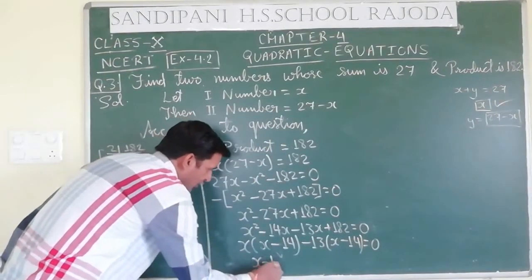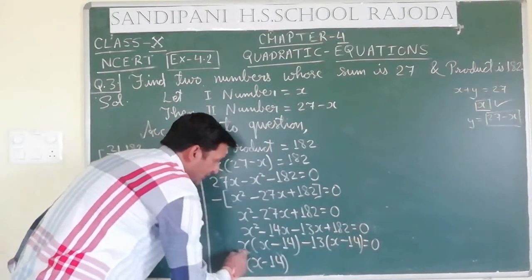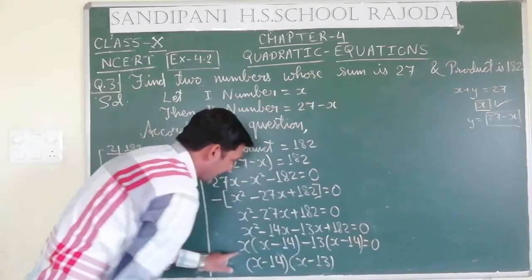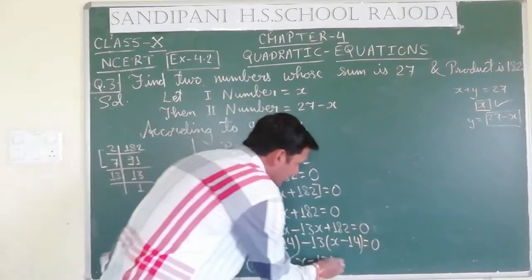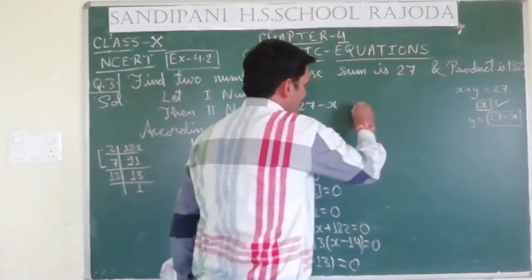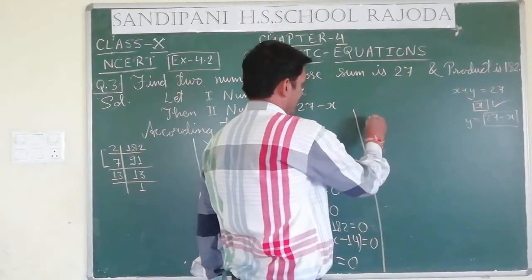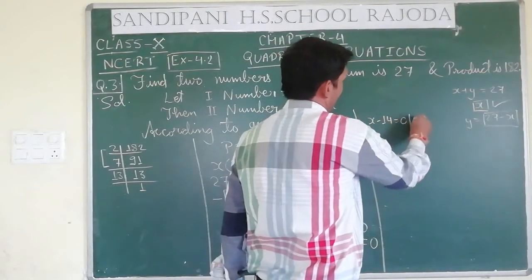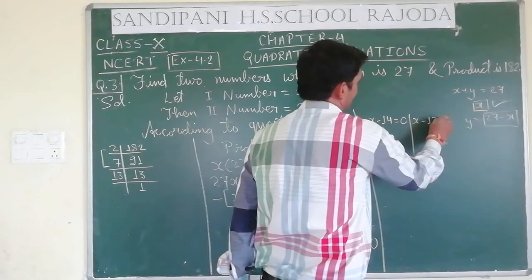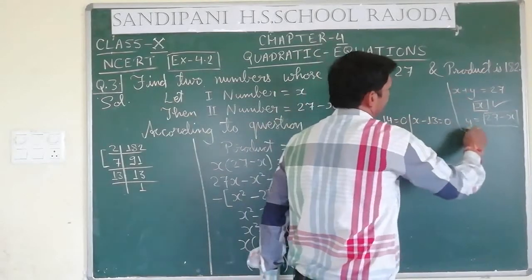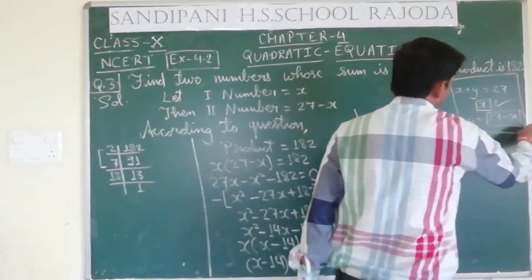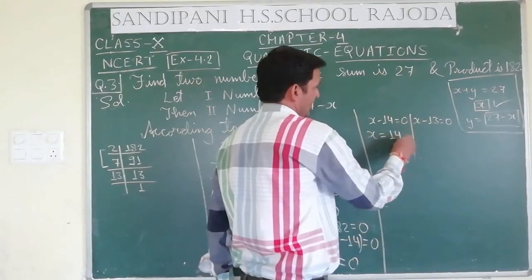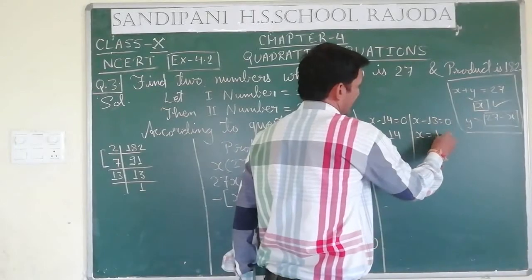Taking x common: x(x minus 14). Taking minus 13 common: minus 13(x minus 14) equals 0. So (x minus 14) is common, giving (x minus 14)(x minus 13) equals 0. Therefore x minus 14 equals 0 or x minus 13 equals 0, giving x equals 14 or x equals 13.